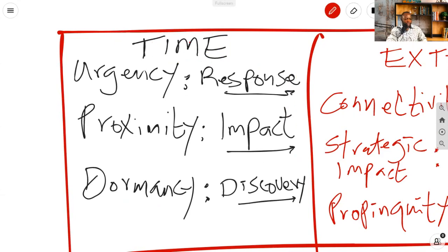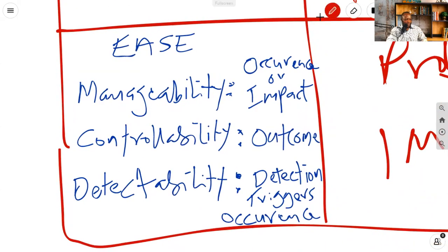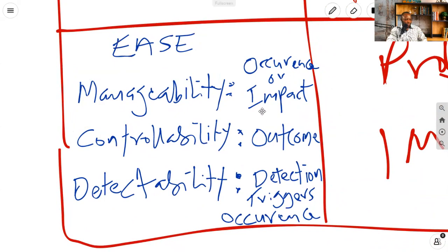And then moving to our next category, I have bucketized these into ease. Under the ease category, we've got manageability, controllability, and detectability. Now let's explore these one by one.